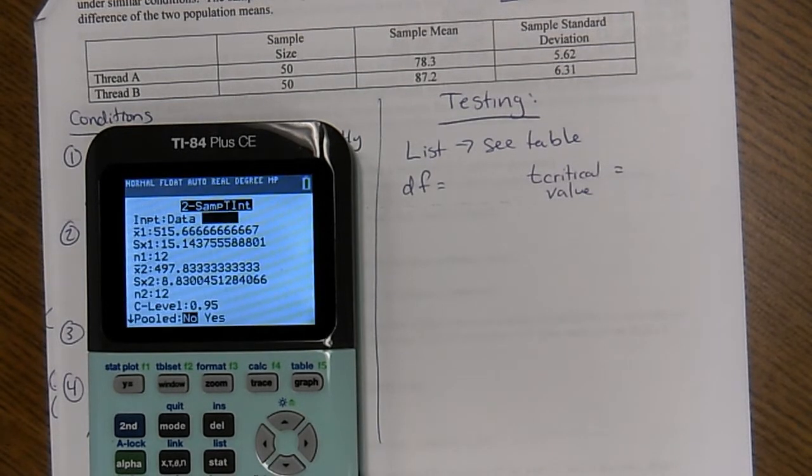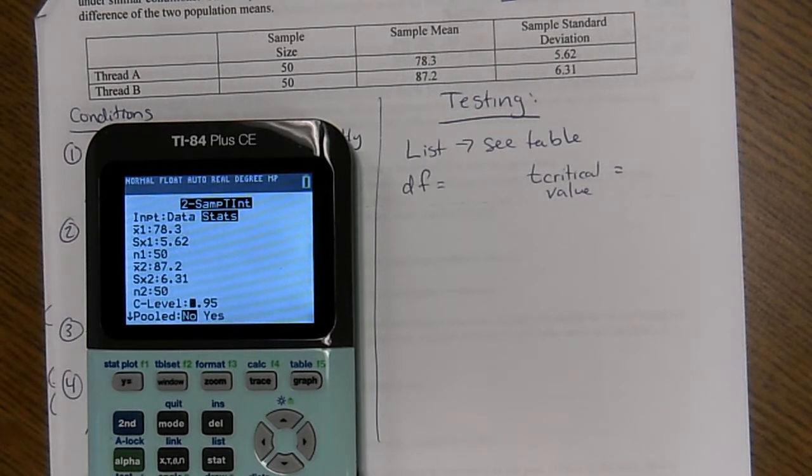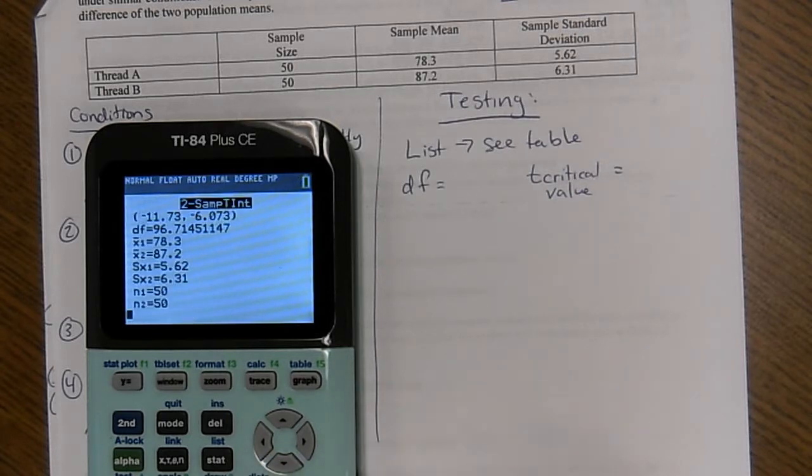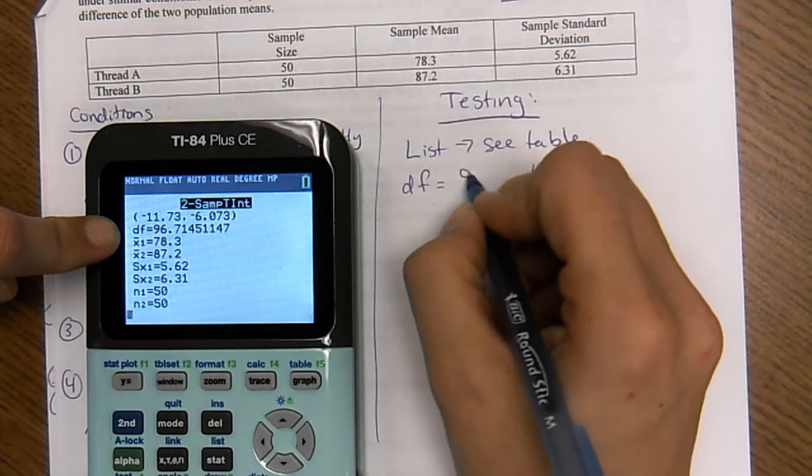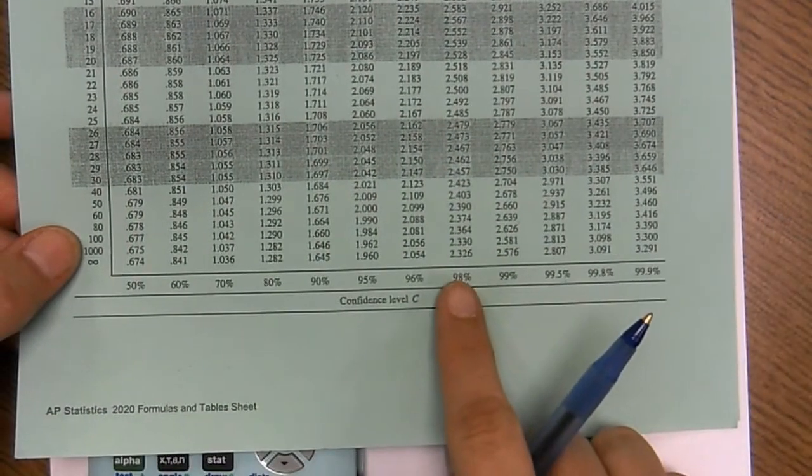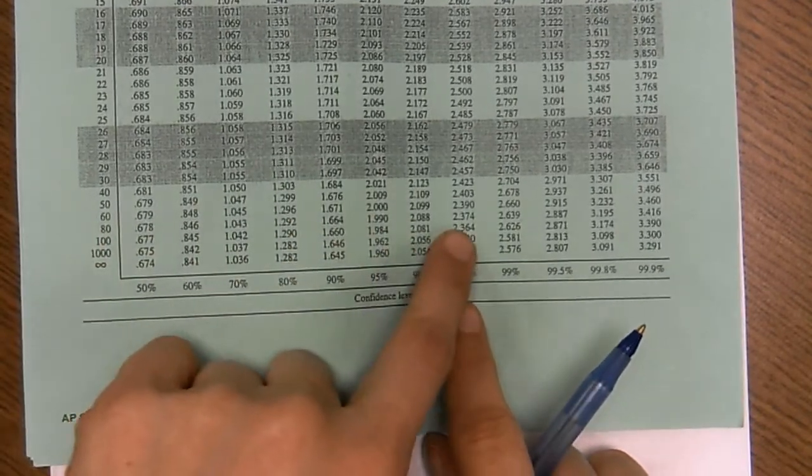So go to your calculator. Go to 2-sample T-interval, test 0. Go to the stat side. And then plug in your sample mean for each one, standard deviation, sample size. We are doing a 98% confidence interval. And if it asks for pooled, just say no. So my degrees of freedom, I'm going to round down to 96.